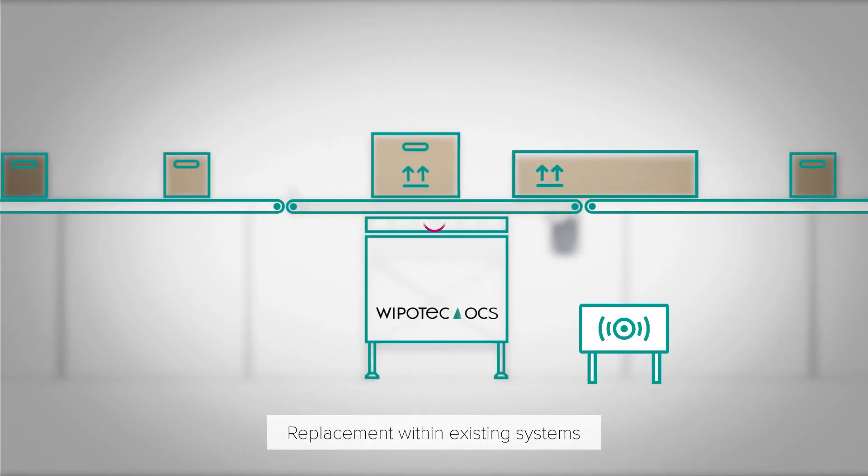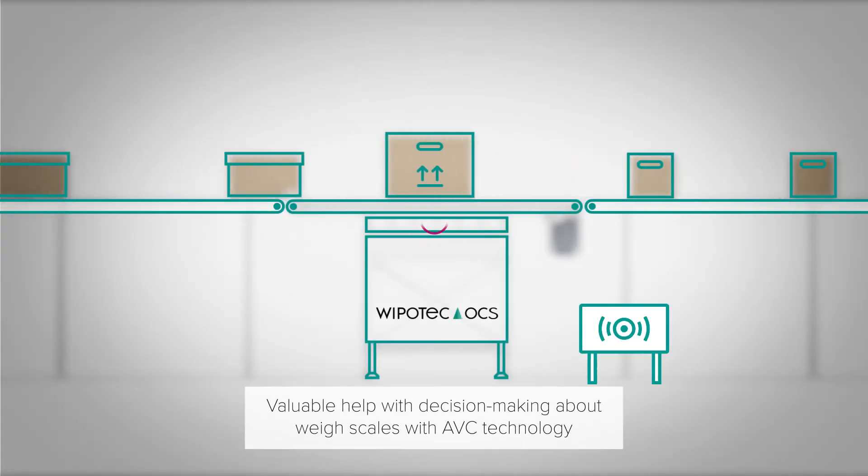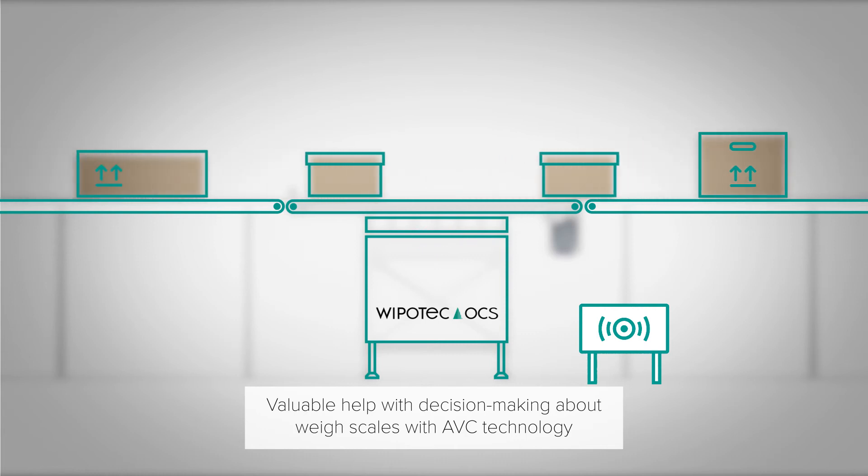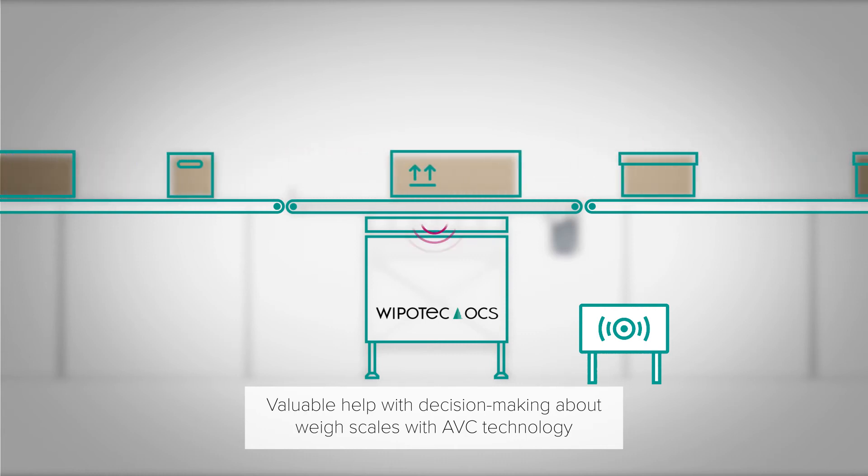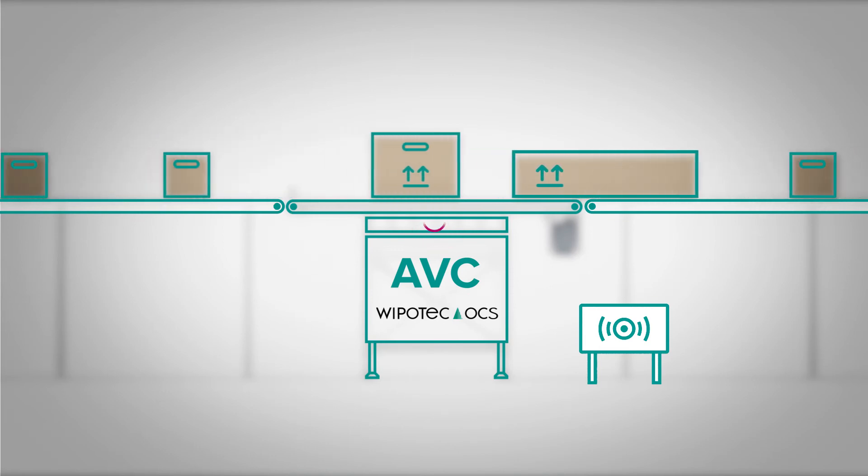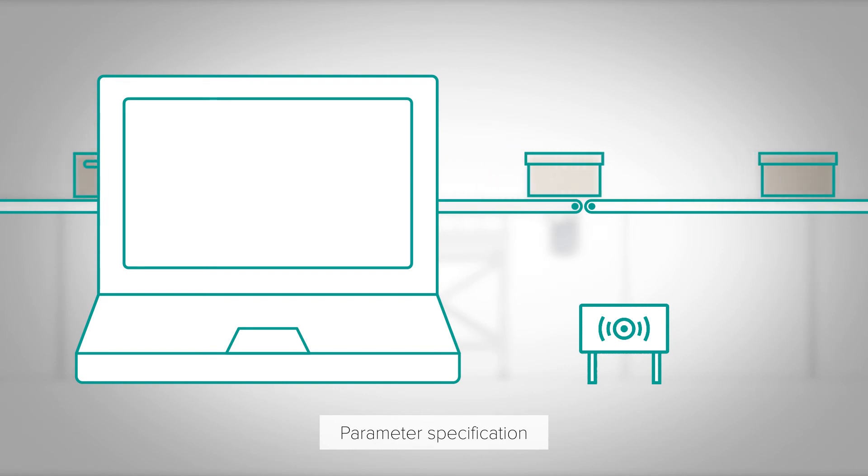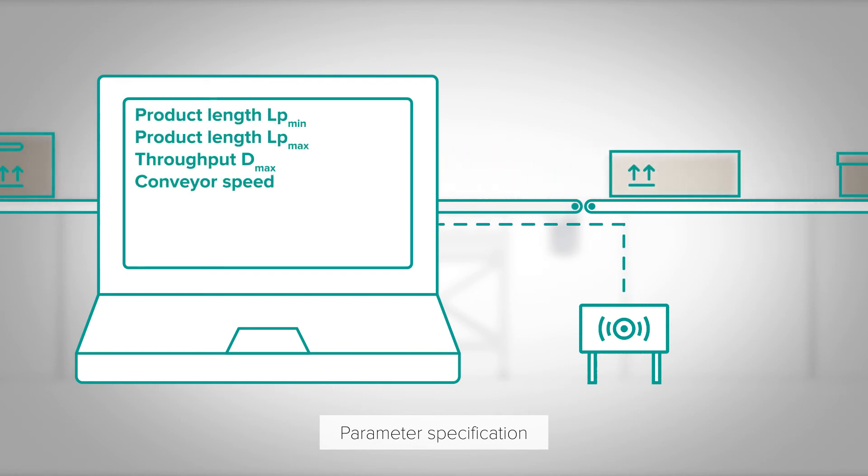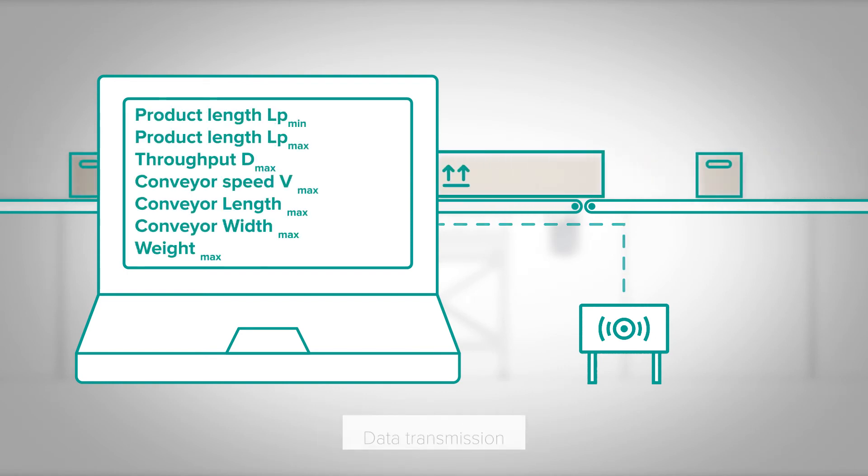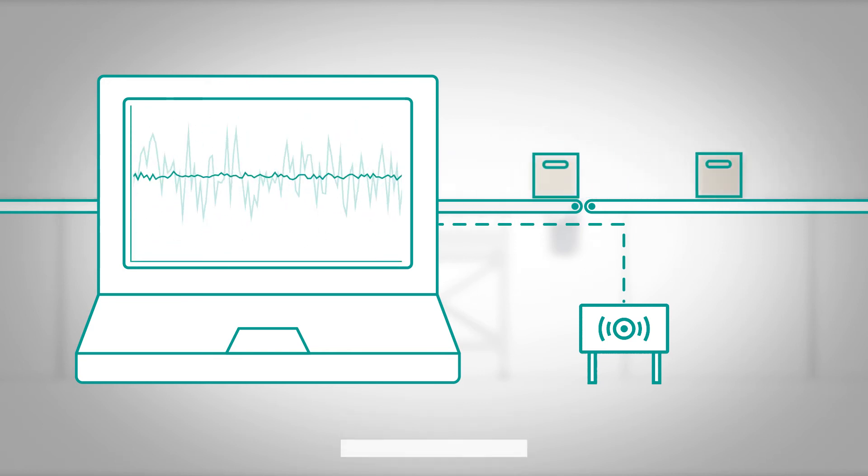By measuring during operation, you can also evaluate to what extent new weigh scales with AVC technology will improve your weighing result based on the local conditions and your specific application data, such as speed, parcel size, throughput rate, etc. The software determines a precise evaluation within minutes.